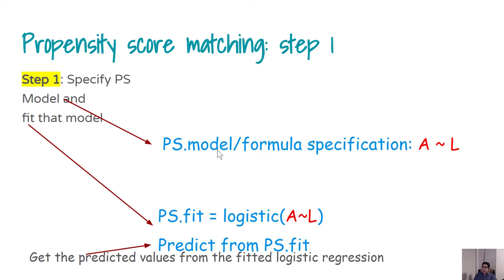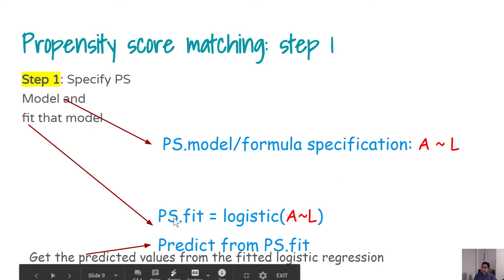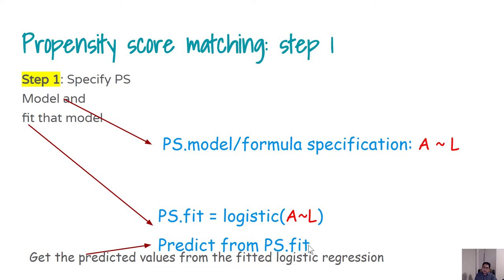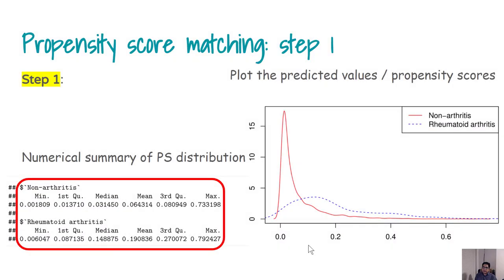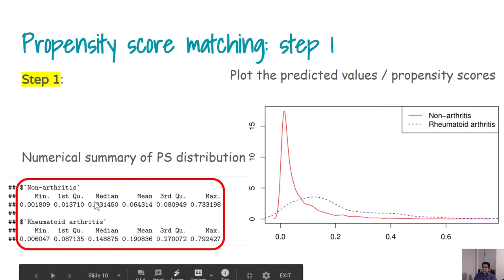In step one, we model our exposure based on the covariates, get a fit, and from that fit we predict the exposure — those predictions are actually the propensity scores. You can take numerical summaries of those propensity scores. Since they are probabilities, they vary from 0 to 1. You can also draw graphical plots to check whether there is sufficient overlap. In this plot, we see the overlap is okay.